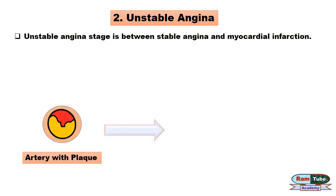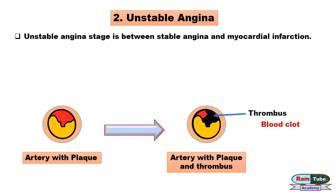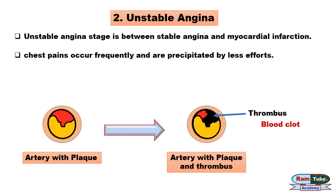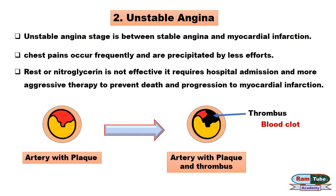Unstable angina is a stage between stable angina and myocardial infarction, in which coronary arteries with atherosclerotic plaque rupture and thrombus formation (blood clot) begins, which further blocks the coronary artery, leaving a very small opening for blood flow and leading to frequent chest pains precipitated by less effort. Rest or nitroglycerin is not effective; it requires hospitalization and more aggressive therapy.